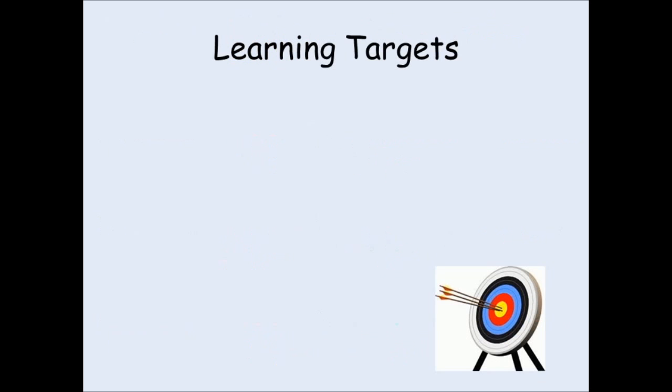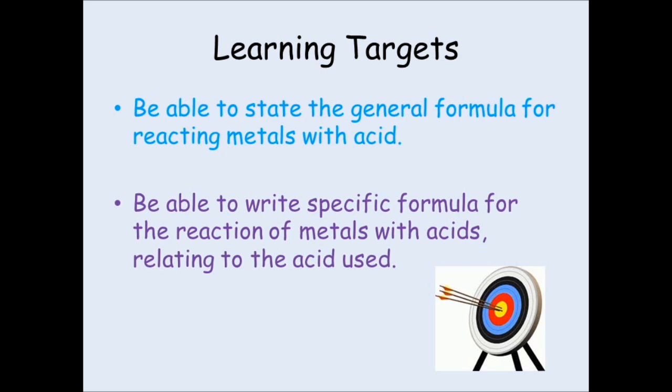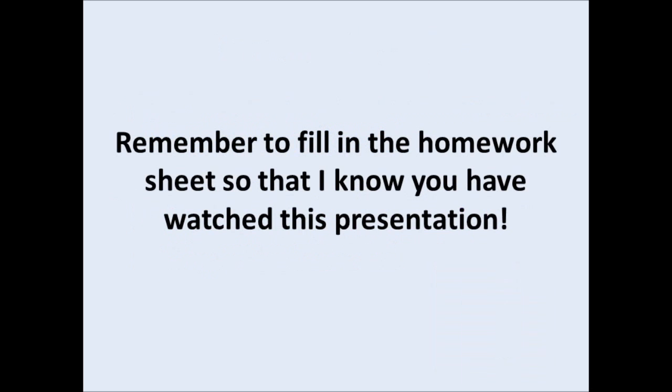So quite a brief presentation this one. Hopefully you should now be able to state the general formula for reacting metals with acids. And depending on which acid used, you should be able to write a specific formula giving the specific chemicals for reacting metals with acids. So thank you for watching this presentation. Please remember to fill in your homework sheet and bring it to the appropriate lesson.